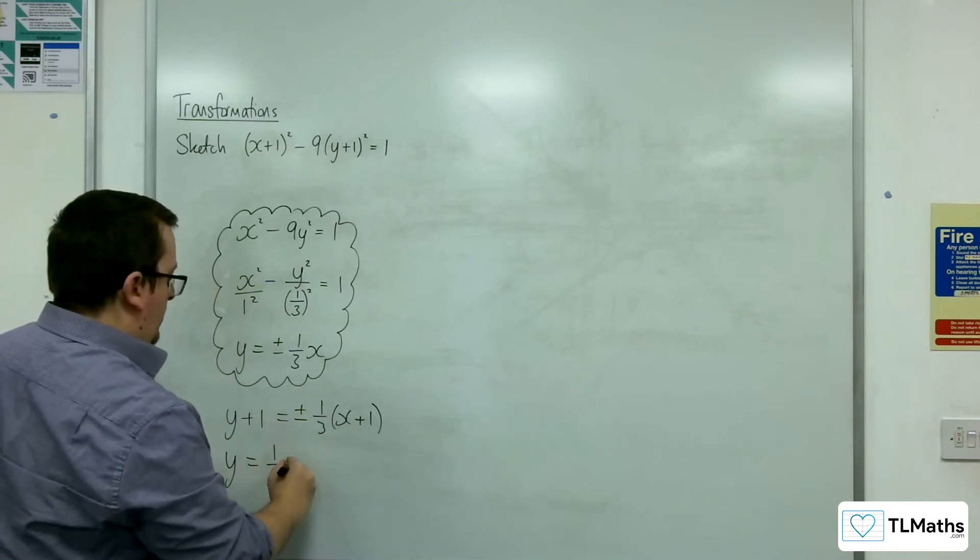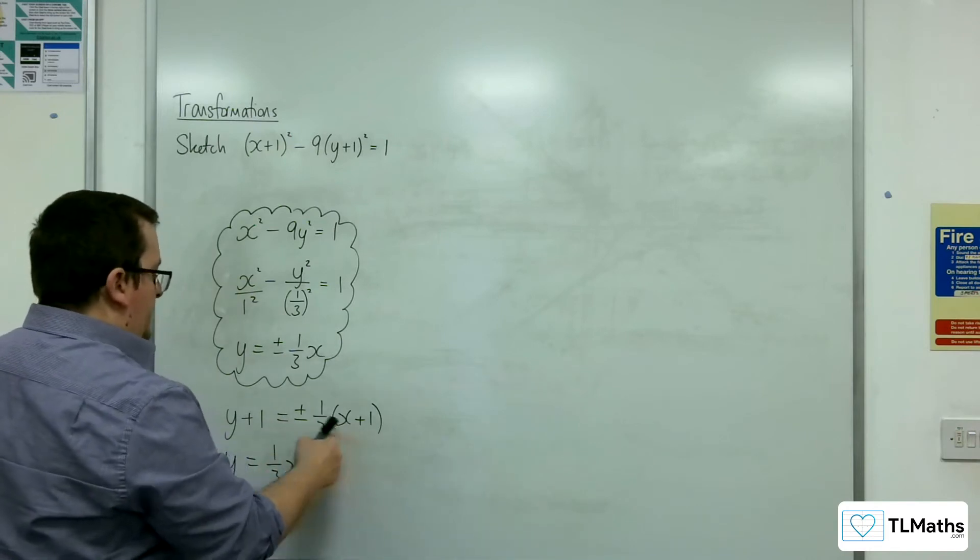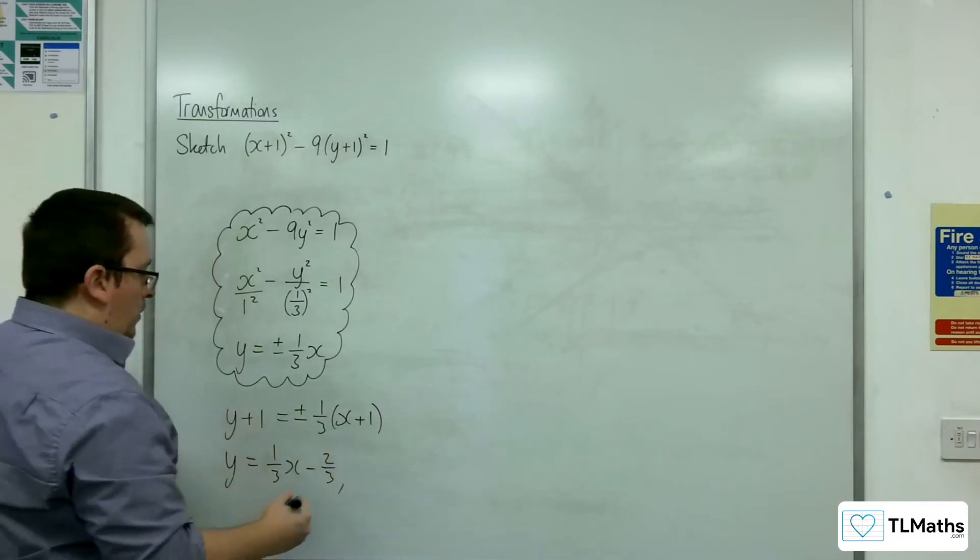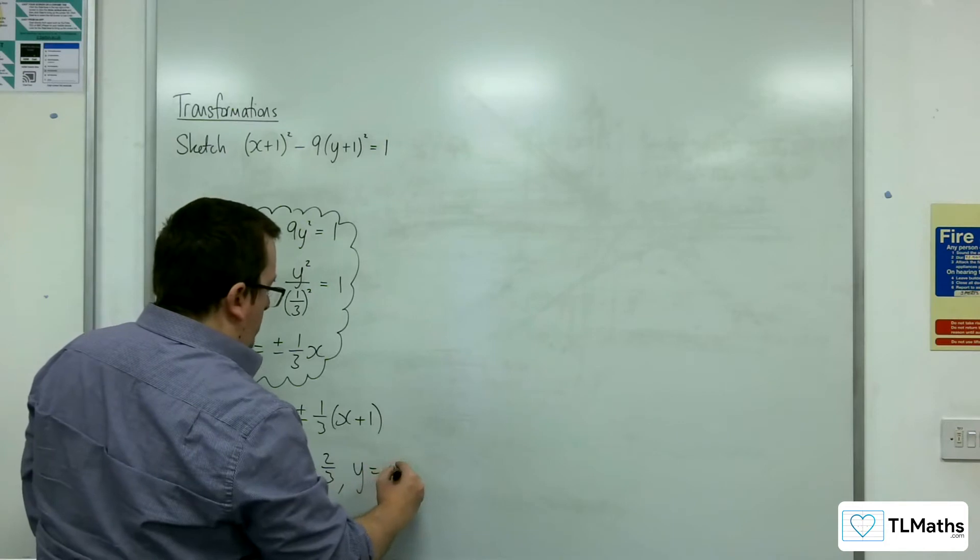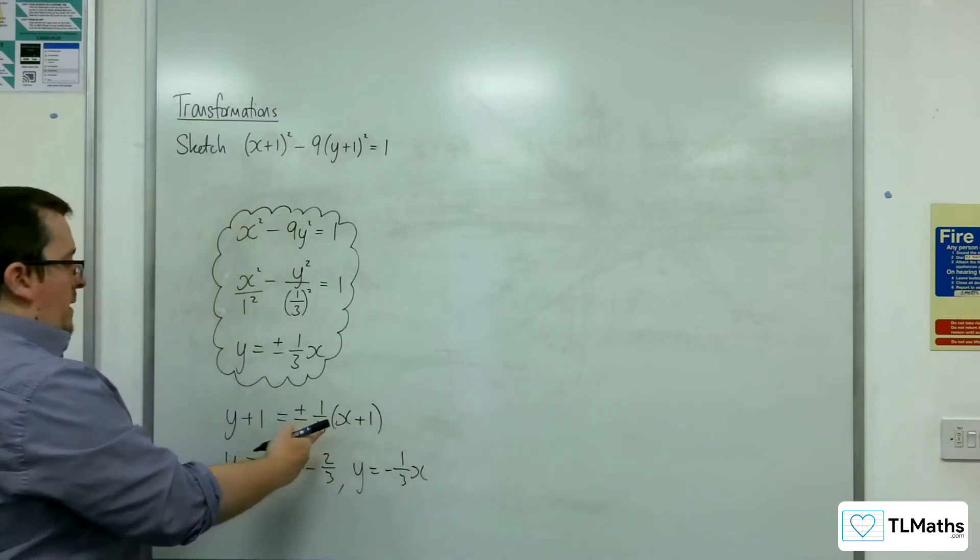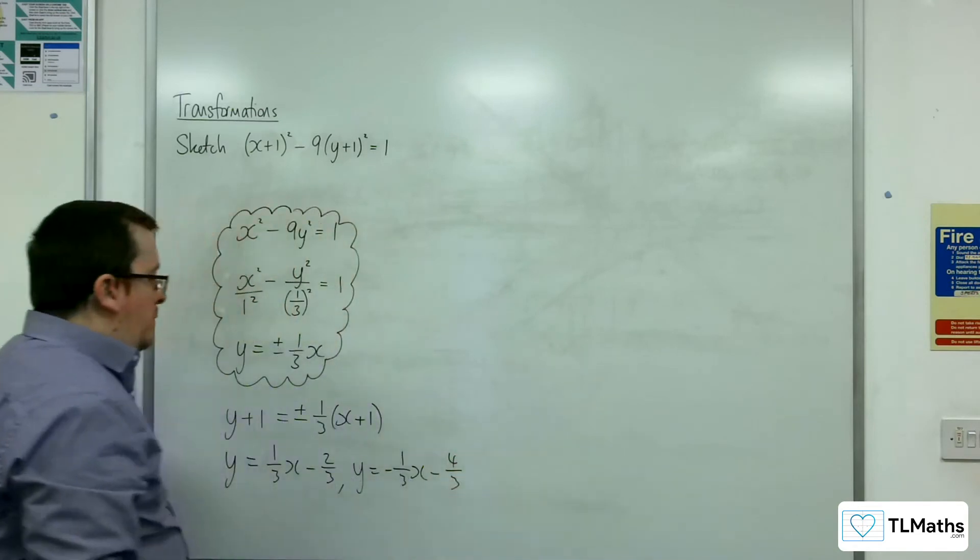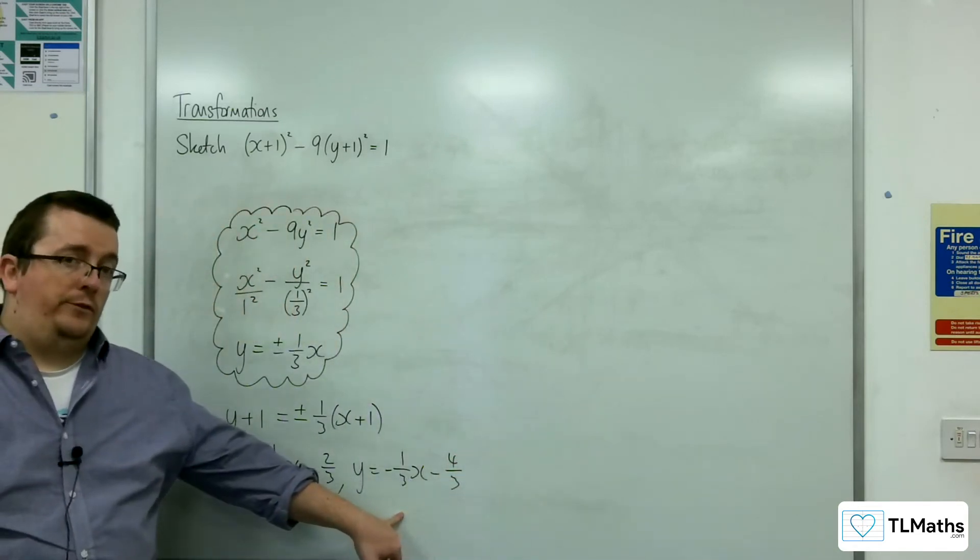So y = (1/3)x + 1/3 - 1, so take away 2/3. Or y = -(1/3)x - 1, so take away 4/3. So they would be the equations of my transformed asymptotes.